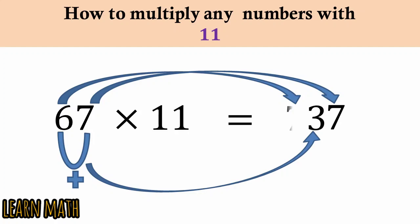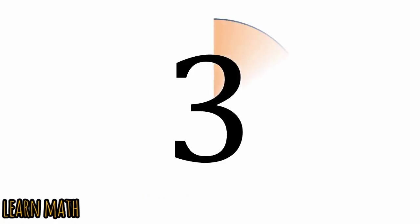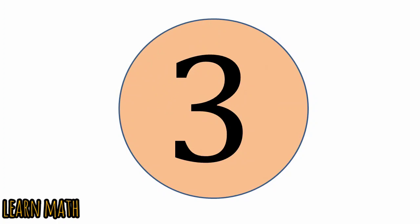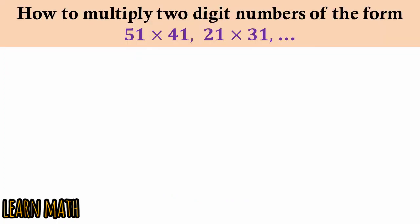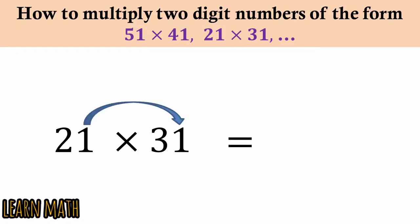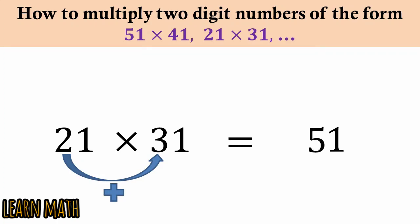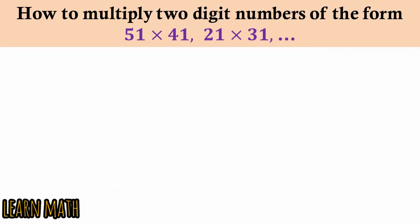The third trick is how to multiply two-digit numbers of this form — numbers ending in 1. For example, 21 multiplied by 31: multiply 1 with 1 and write here, then 2 plus 3 is 5, and then 2 into 3 is 6 — so 651 is the answer. The second example is 41 multiplied by 51.